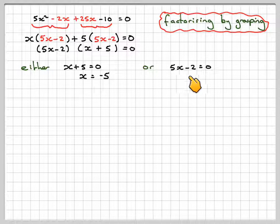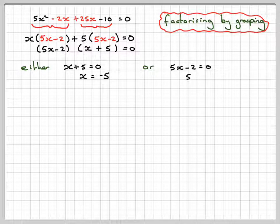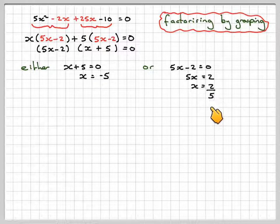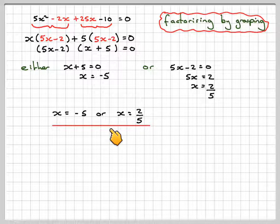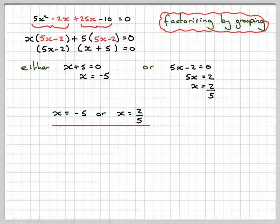Or 5x minus 2 is equal to 0, which gives 5x is equal to 2, x is equal to 2 over 5, and therefore we end up with x is equal to minus 5, or x is equal to 2 over 5.